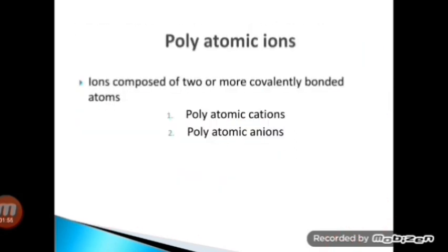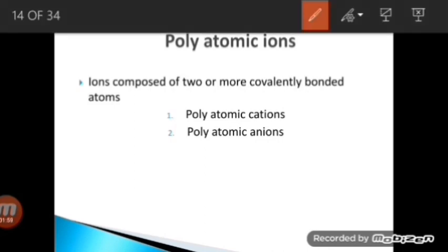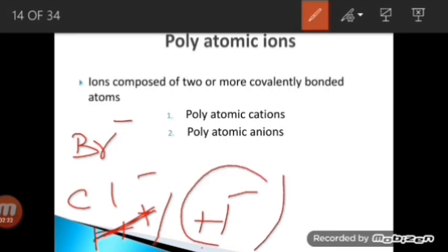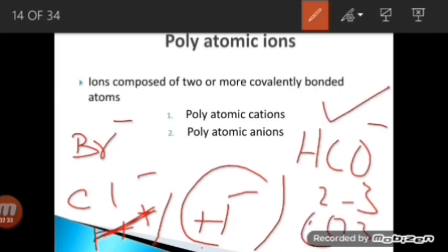Some common anions include bromide (Br⁻), chloride (Cl⁻), and hydride (H⁻) — whenever hydrogen accepts an electron it turns into hydride, the anion of hydrogen. We also have carbonate (CO₃²⁻), bicarbonate (HCO₃⁻), and sulfate (SO₄²⁻).